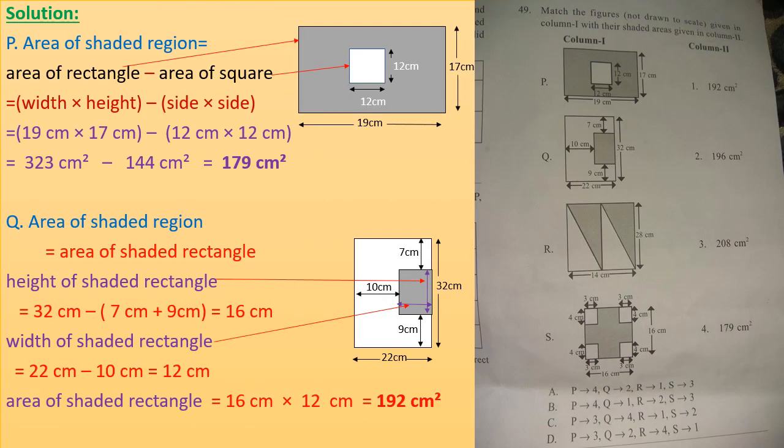The next question: match the figures (not drawn to scale) given in column 1 with their shaded areas given in column 2. In column 1, figures are given as options P, Q, R, S and we have to calculate the areas of the shaded region and match them with areas given in column 2. We start with option P.